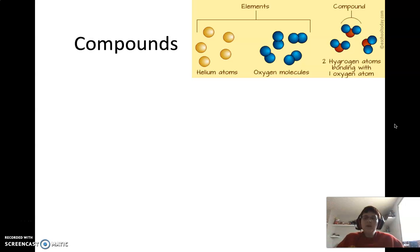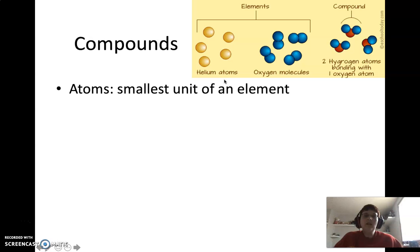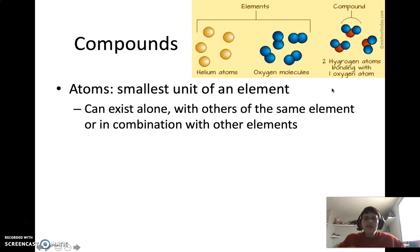So a little bit of review of terms, because we'll be using these terms on and off through the next couple of chapters. So atoms, we've seen atoms before. That's the smallest unit of an element. So we can have helium atoms and oxygen atoms. Helium can stand alone, because they are in those noble gases, so they can be by themselves. But we can have, for example, hydrogen atoms bonded to oxygen atoms. So they can exist alone or with others of the same elements. So we have oxygen atoms bound together here or in combination with other elements.